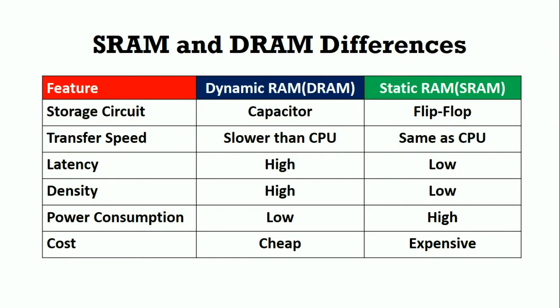The first feature is storage circuit. For Dynamic RAM, it is a capacitor, and for Static RAM, it is a flip-flop. The transfer speed is slower than the CPU for Dynamic RAM, and it is high — same as the CPU — for Static RAM.